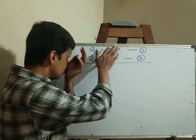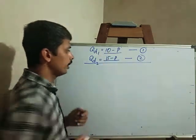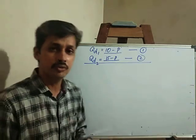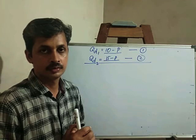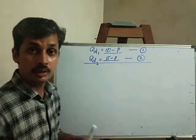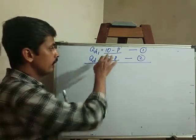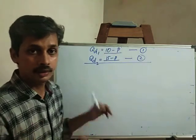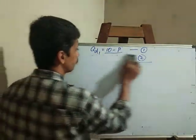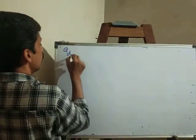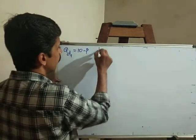The second consumer equation shows quantity demanded is equal to zero at a certain price threshold. The demand schedule shows price and quantity demanded. When price is zero, the first consumer demands 10 units.